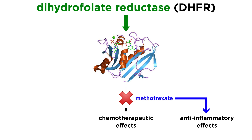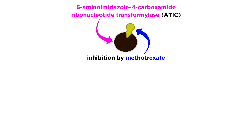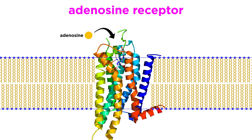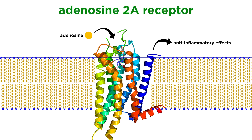However, the anti-inflammatory effects of methotrexate likely occur through a separate unique mechanism. Methotrexate also inhibits another enzyme called 5-aminoimidazole-4-carboxamide ribonucleotide transformylase, or ATIC, which through a multi-step pathway leads to the accumulation of the adenosine nucleotide within the cell. When released, this adenosine can stimulate adenosine receptors, which mediate various anti-inflammatory effects in surrounding cells and tissues. While there are four adenosine receptors, the major anti-inflammatory effects of methotrexate may be driven primarily through activation of one receptor, the adenosine-2A receptor.